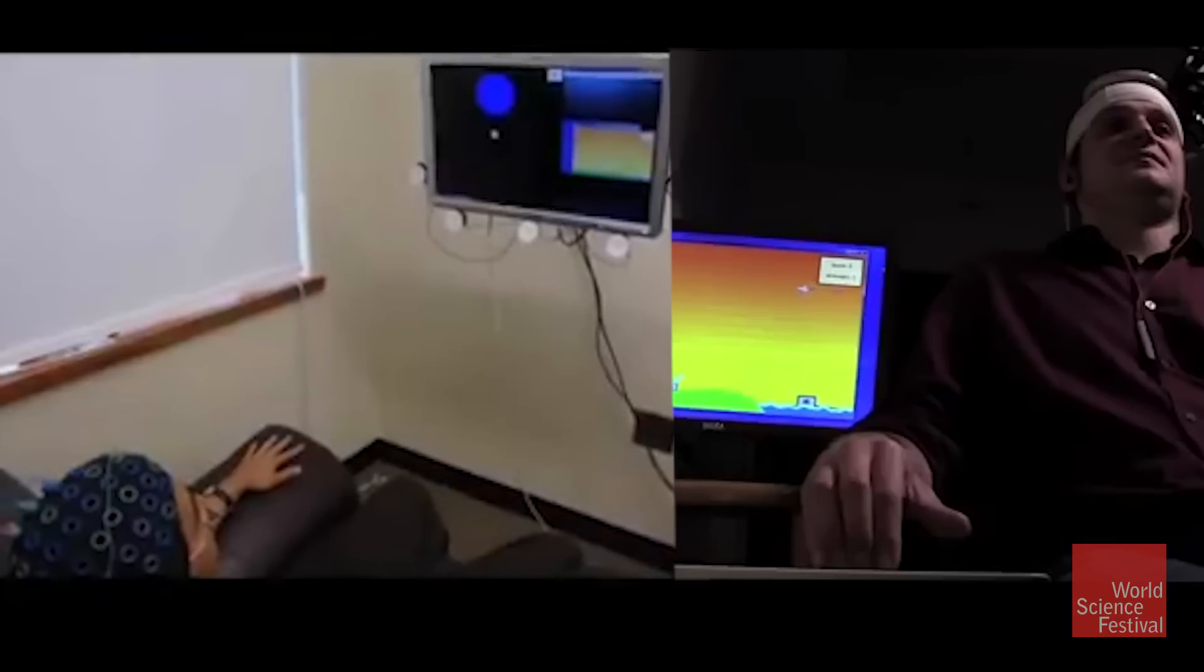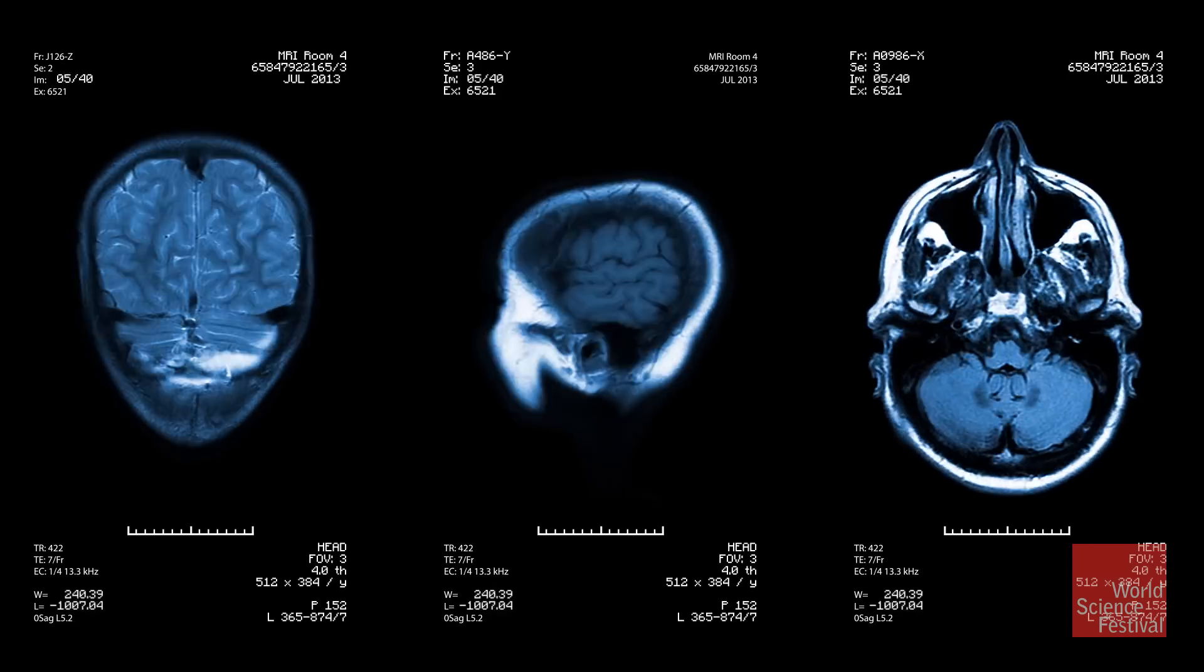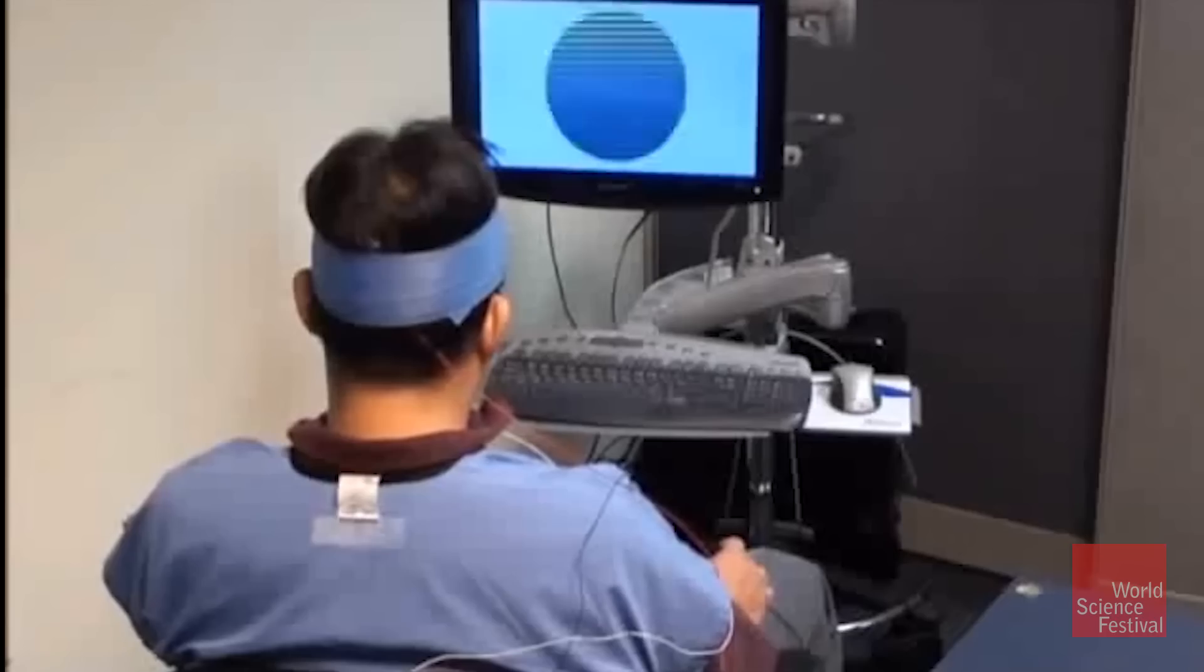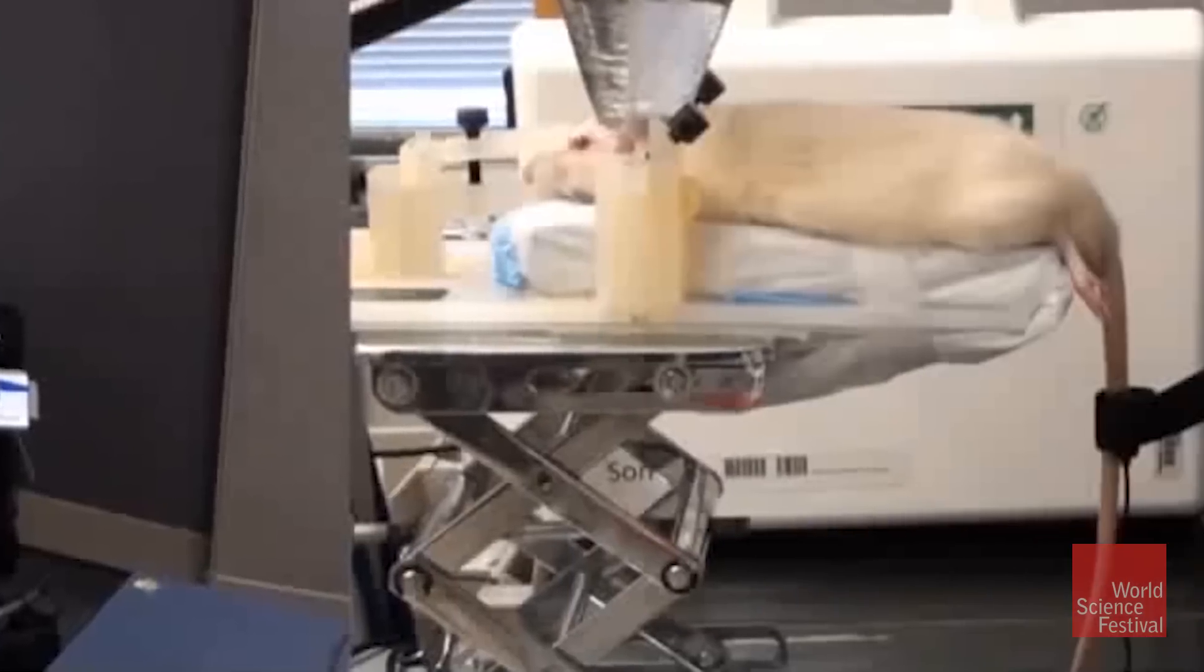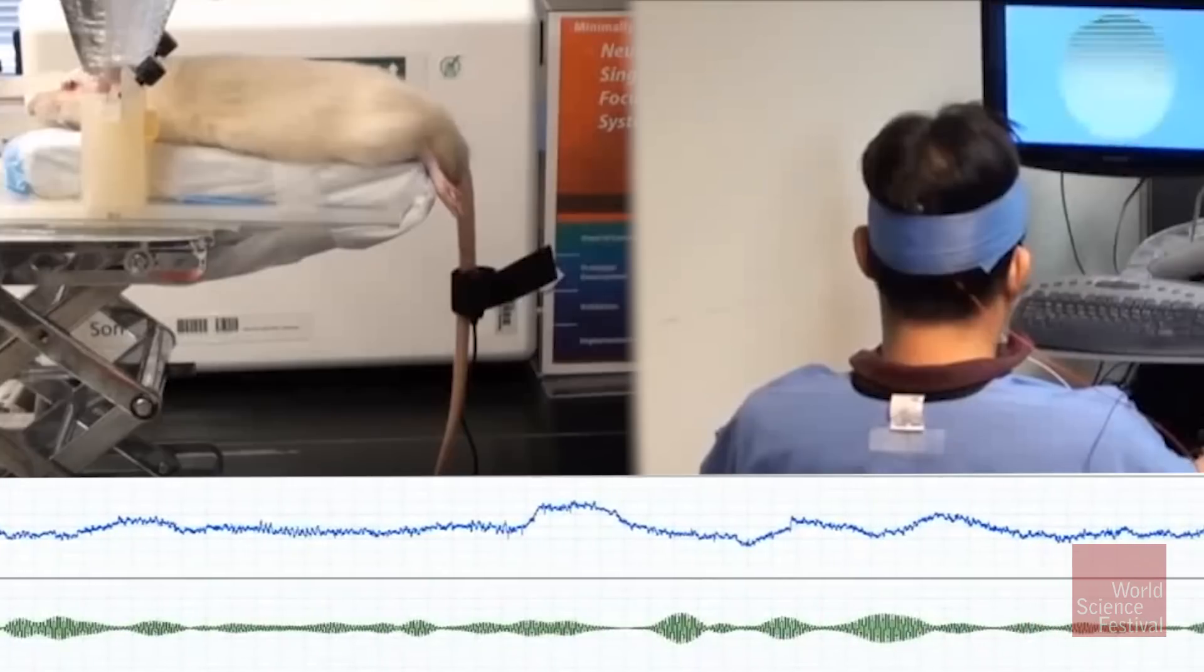In another kind of experiment involving human-to-animal communication, scientists were able to take signals from a human brain and transfer them to an animal brain, using signals from the human to move a rat's tail.